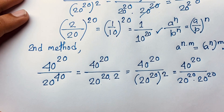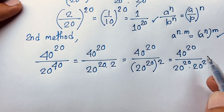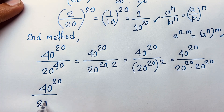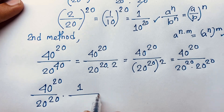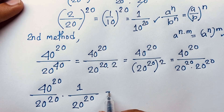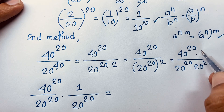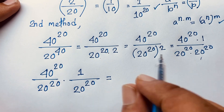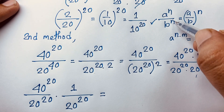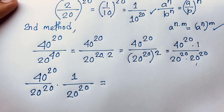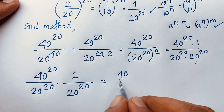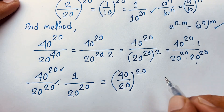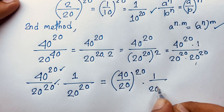So the expression becomes 40 power 20 over 20 power 20 times 20 power 20. I separate this as 40 power 20 over 20 power 20, times 1 over 20 power 20. Now applying the law a^n over b^n = (a/b)^n, since the exponents are the same, it becomes (40/20) bracket power 20, times 1 over 20 power 20.